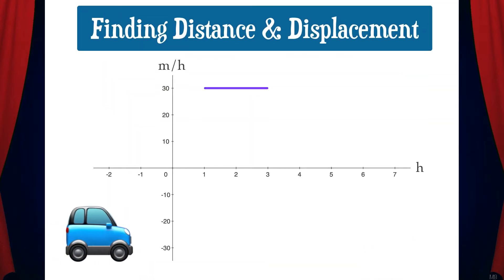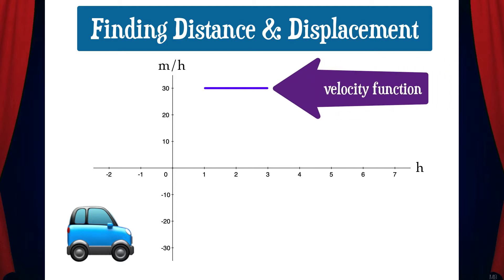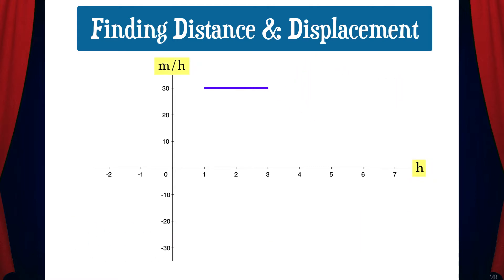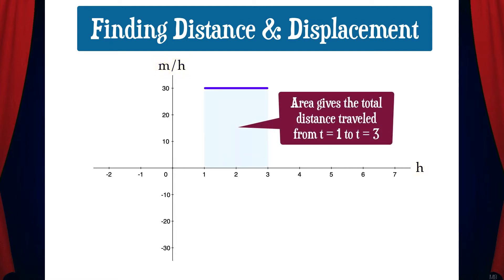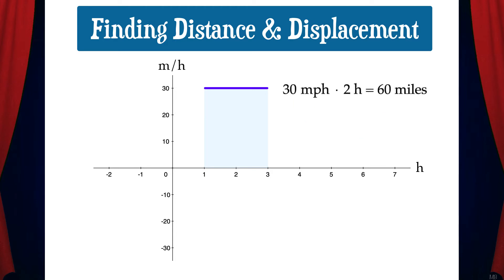So now let's suppose that between t equals 1 and t equals 3, a car has a velocity of 30 miles per hour. This is a graph of the car's velocity function. Note that the y-axis has units of miles per hour and the x-axis has units of hours. If we find the area under the curve, we get the total distance that the car travels between the hours of 1 and 3: 30 miles per hour times 2 hours equals 60 miles. We can also express this as the definite integral from 1 to 3 of v of t dt, which equals 60 miles.